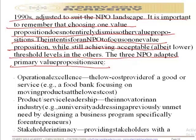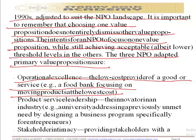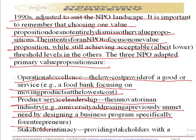There are three NPO-adapted primary value propositions. The first is operational excellence — being a low-cost provider of goods or services, for example a food bank focusing on moving products at the lowest possible cost. The second is product or service leadership — being an innovator in an industry, for example a university addressing a previously unmet need by designing a business program specifically for entrepreneurs.